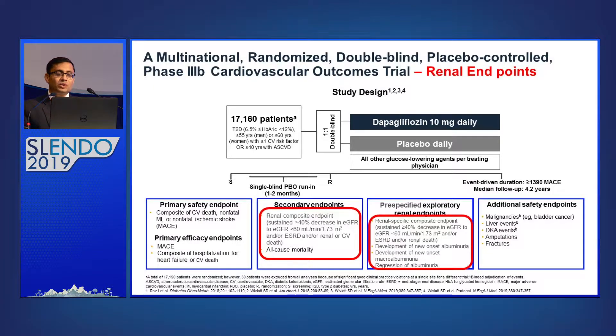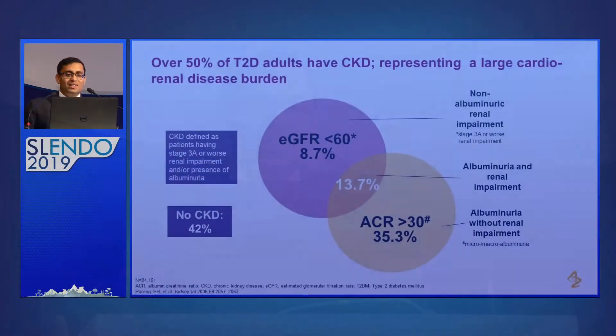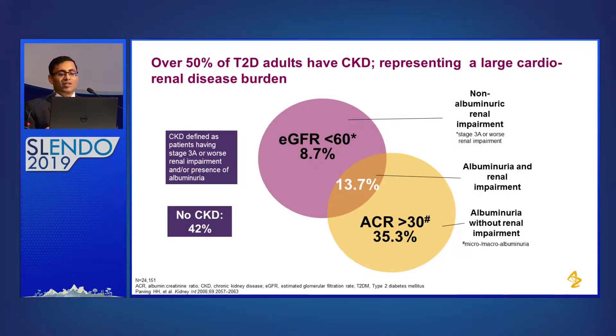Now, a few slides on renal endpoints, which gained attention after the CREDENCE trial where canagliflozin showed good prevention of renal endpoints. DECLARE also had renal secondary endpoints — reduction in eGFR, ESRD, or renal death. It included patients with non-albuminuric renal impairment and those with albuminuria without renal impairment. As Dr. Shishadri mentioned, almost one-third of patients will have albuminuria without any impairment in eGFR; others will have no albuminuria but an eGFR less than 60.